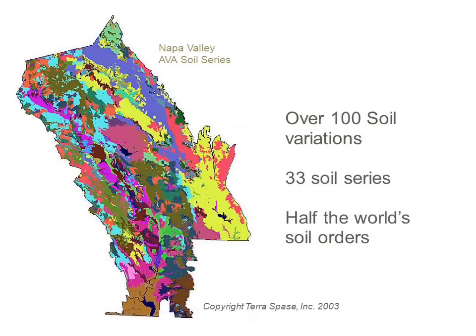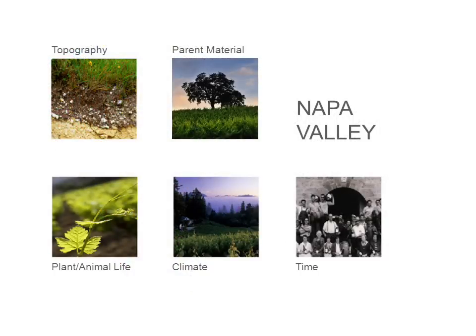Napa Valley contains more than 100 soil variations, 33 soil series, and half the soil orders found in the world. This picture shows how literally there can be different kinds of soils in the same vineyard in Napa Valley. This diversity allows vintners to grow and produce a great number of different wine varieties from one place. One of the secrets of great wine growing is in the soil, and Napa Valley has some of the greatest soil diversity found in any wine growing region around the world. But soil is not the only thing that makes Napa Valley great — climate is another important part of the equation.